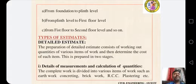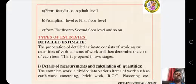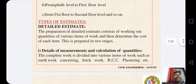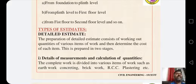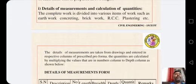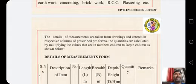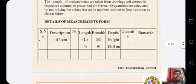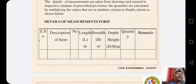Types of Estimates: Detailed Estimates. The preparation of a detailed estimate consists of working out quantities of various items of work and then determining the cost of each item. This is prepared in two stages: details of measurements and calculation of quantities. The complete work is divided into various items such as earthwork, concreting, brickwork, RCC, plastering etc. The details of measurements are taken from drawings and entered in respective columns. Quantities are calculated by multiplying the values in number, length, breadth and depth. The detailed estimation tabular column includes: serial number, description of items, numbers, length, breadth, depth, quantity, and remark.